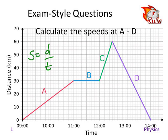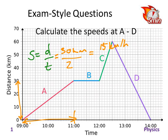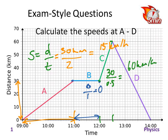To calculate the speed at part A, the distance travelled is 30 kilometres and that took between 9 and 11, so 2 hours — its speed there will be 15 kilometres per hour. At B, it started at 30 and it's still there, so distance is 0: 0 divided by 1 is 0 kilometres per hour. At C, it went from 30 up to 60 — 30 kilometres in half an hour (0.5 hours) — so speed was 60 kilometres per hour. And D would be 40 kilometres per hour.